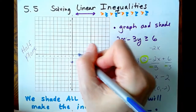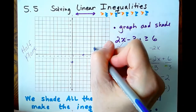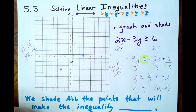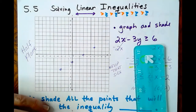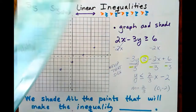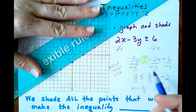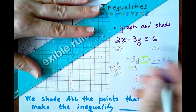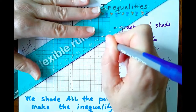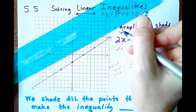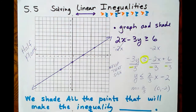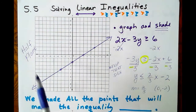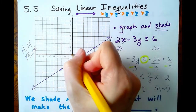Now let's graph it. We've got a slope of 2/3 and a y-intercept at negative 2. So up 2 over 3, up 2 over 3, down 2 back 3. Because we have an 'or equal to,' just like a filled-in circle on the number line, this is going to create a solid line. I'm drawing it all the way across the plane, and now we're going to shade.